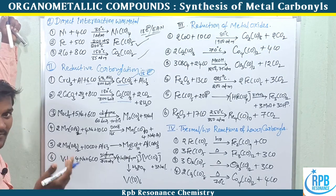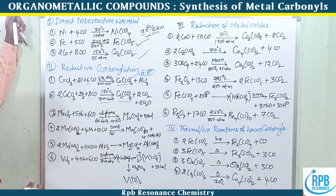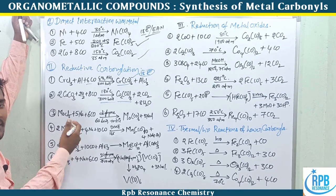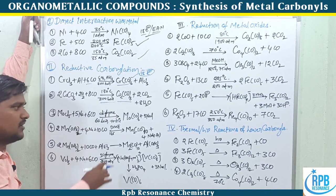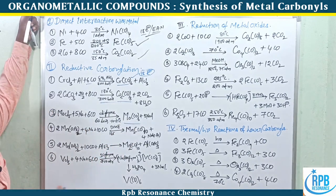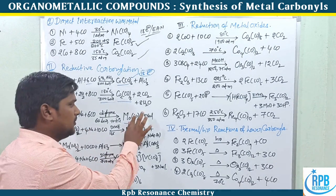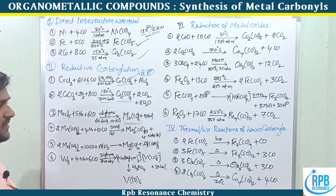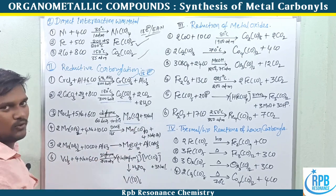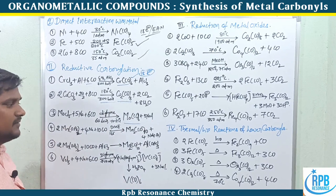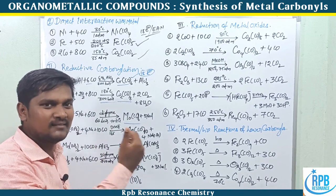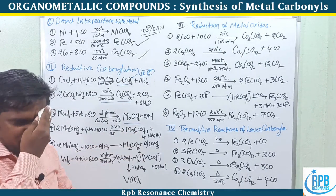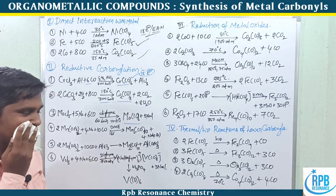Third example: molybdenum pentachloride (MoCl5) in the presence of sodium metal and carbon monoxide gives molybdenum hexacarbonyl, Mo(CO)6, along with sodium chloride. The role of sodium here is to release electrons to the metal, and it is converted to sodium chloride in the process.